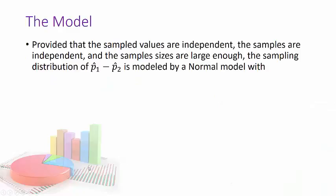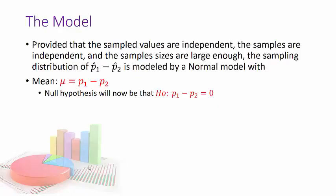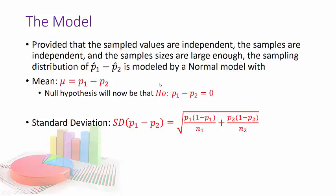First of all you'll probably notice this slide did not change at all. The model is still the same. The mean is the difference between the two parameters. I personally prefer putting the larger number minus the smaller number, the more positive minus the smaller. You can do it either way. And the null hypothesis is that the difference is always zero.